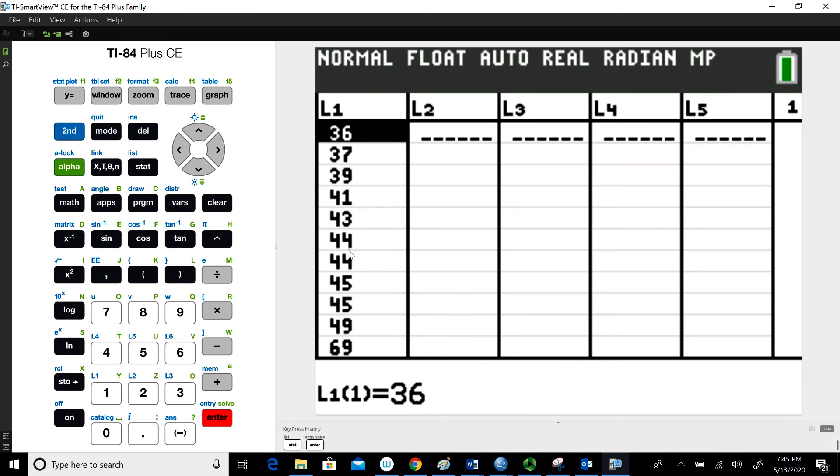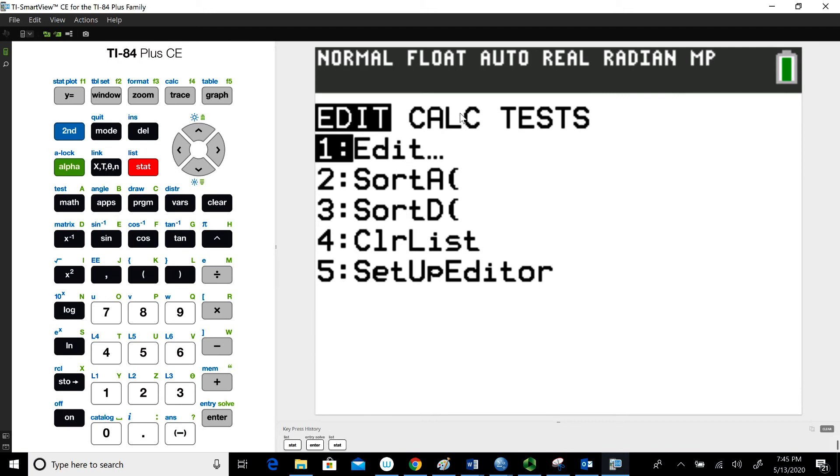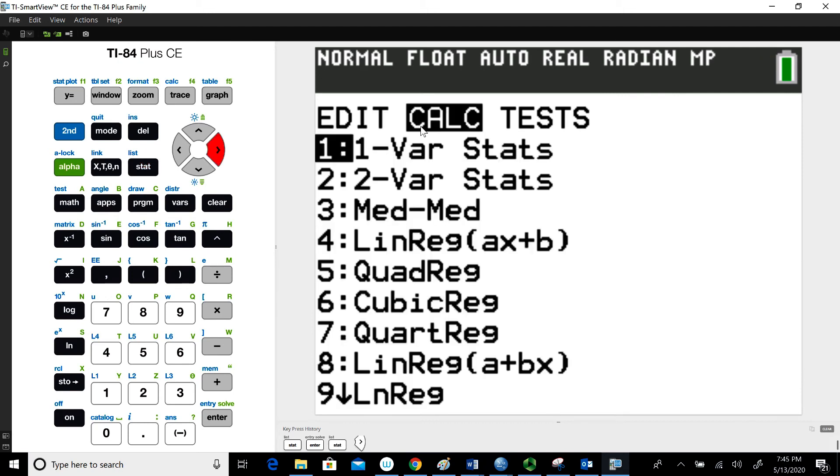Once we have the data in a list, we can go back to statistics. And this time, we want to go over to this calculate menu. The way we get there is we use the right navigation arrow right here. We're going to choose one variable statistics because I'm only dealing with one variable. And then you'll hit enter.